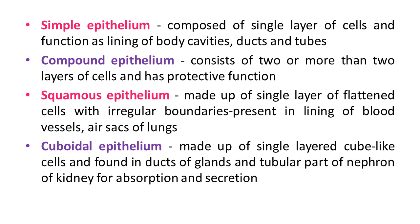Simple epithelium is further classified into squamous, cuboidal, and columnar epithelium tissue. Squamous type epithelium is made up of a single layer of flattened cells with irregular boundaries. This tissue is generally present in the lining of blood vessels and air sacs of the lungs.